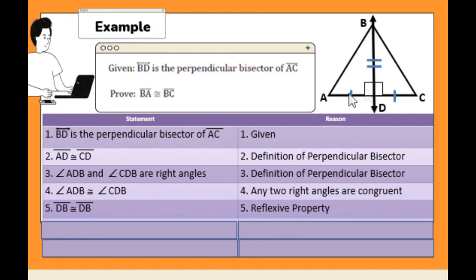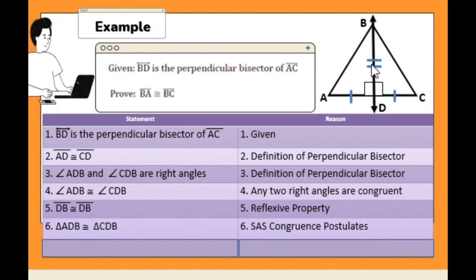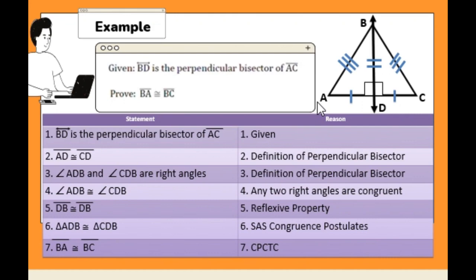We now have triangle congruence: triangle ADB is congruent to triangle CDB — the reason is SAS congruence postulate. Therefore, we can prove that line segment BA is congruent to line segment BC — the reason is CPCTC, or corresponding parts of congruent triangles are congruent.